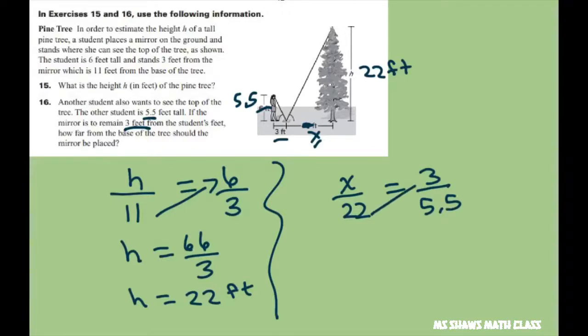Cross multiply and you get x equals 66 divided by 5.5 and that gives you 12 feet. So this would be 12 feet.